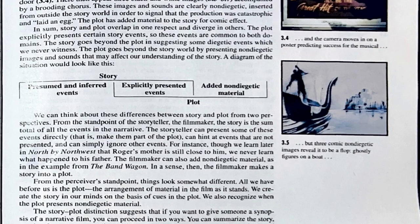In sum, story and plot overlap in one respect and diverge in others. The plot explicitly presents certain story elements, so these events are common to both domains. The story goes beyond the plot in suggesting some diegetic elements which we never witness. The plot goes beyond the story world by presenting non-diegetic images and sounds that may affect our understanding of the story. A diagram of the situation would look like this. We can think about the relationship between story and plot from two perspectives. From the standpoint of the storyteller — the filmmaker — the story is the sum total of all the events in the narrative. The storyteller can present some of these events directly, that is, make them part of the plot, can hint at events that are not presented, and can simply ignore other events.